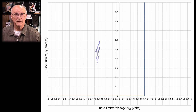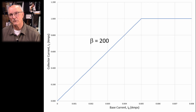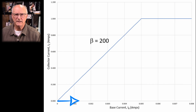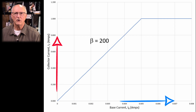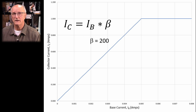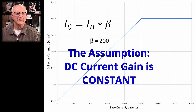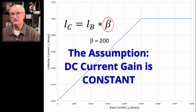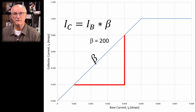Now that we have base current, we switch to a plot showing the collector current on the vertical axis and the base current on the horizontal axis. As the base current increases, the collector current also increases linearly as dictated by this equation: the collector current is equal to the base current times beta. The assumption at this point is that the DC current gain H_FE, or beta, is a singular number which is not changing with operating conditions. This dictates the slope of this line.